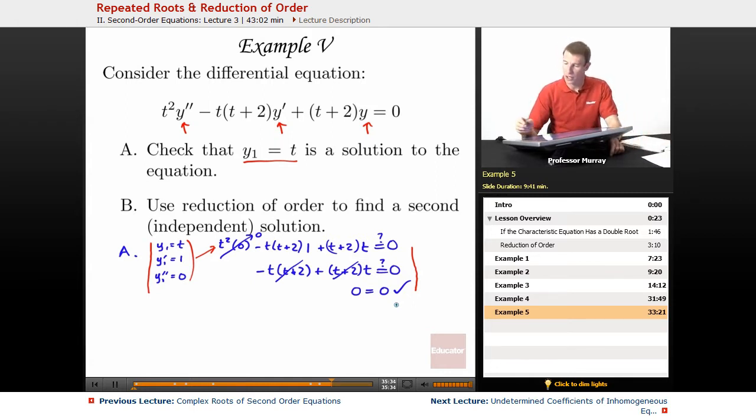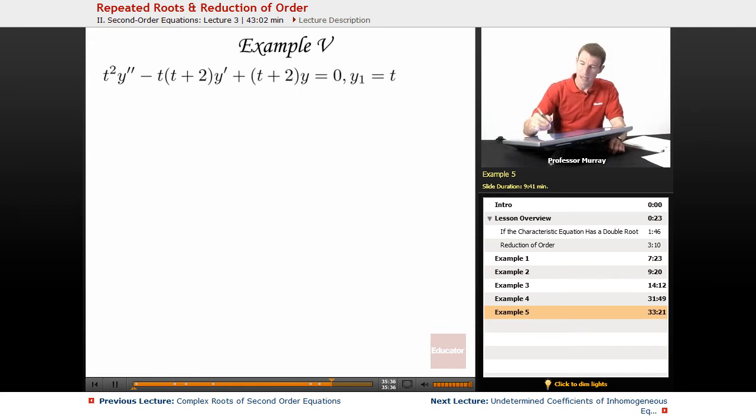The harder part is part B, where we'll use reduction of order to find a second solution. With reduction of order, we need an equation of the form y double prime plus p1 y prime plus p2 y equals 0. We don't have that yet because we have coefficient t squared in front of y double prime.